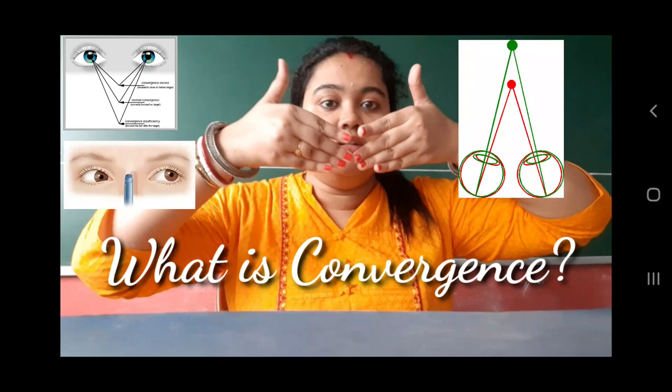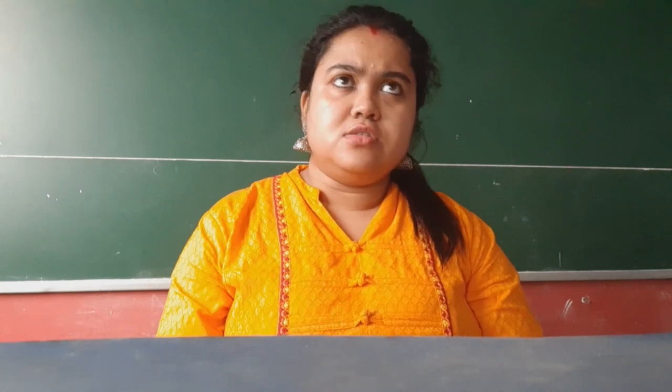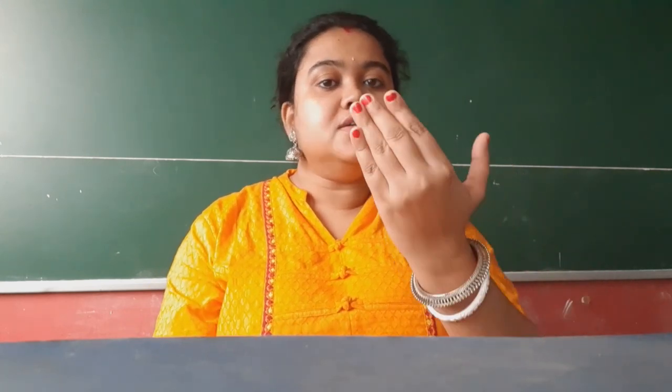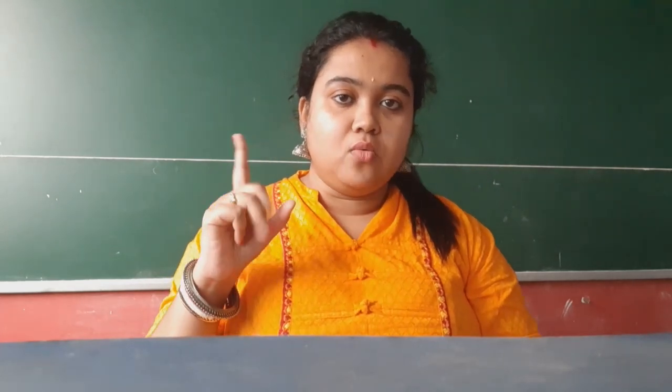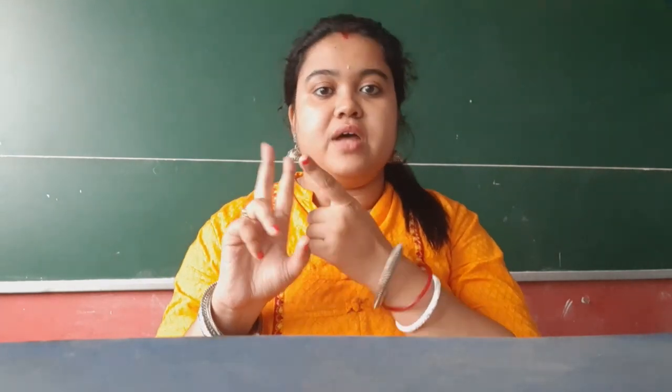Convergence is a very important phenomenon, so we'll talk about convergence today. When an object comes near to your eyes, there are actually three things happening: one is convergence, one is accommodation, and the third one is pupillary constriction. These three things together are called the near triad.